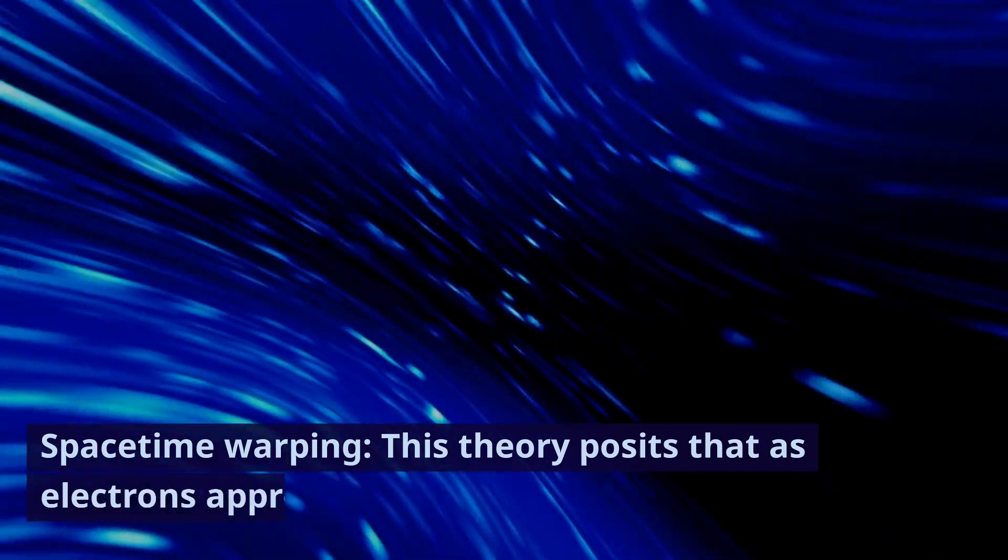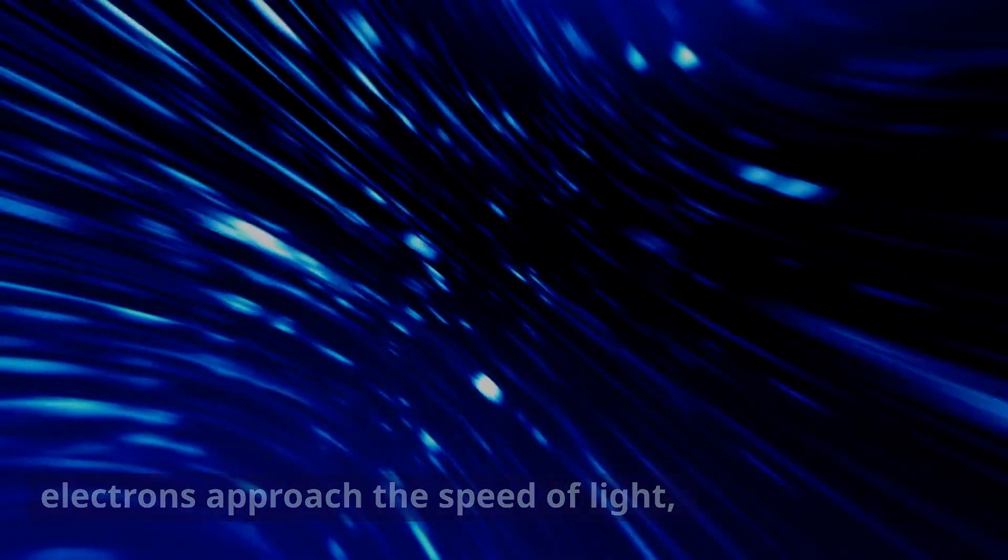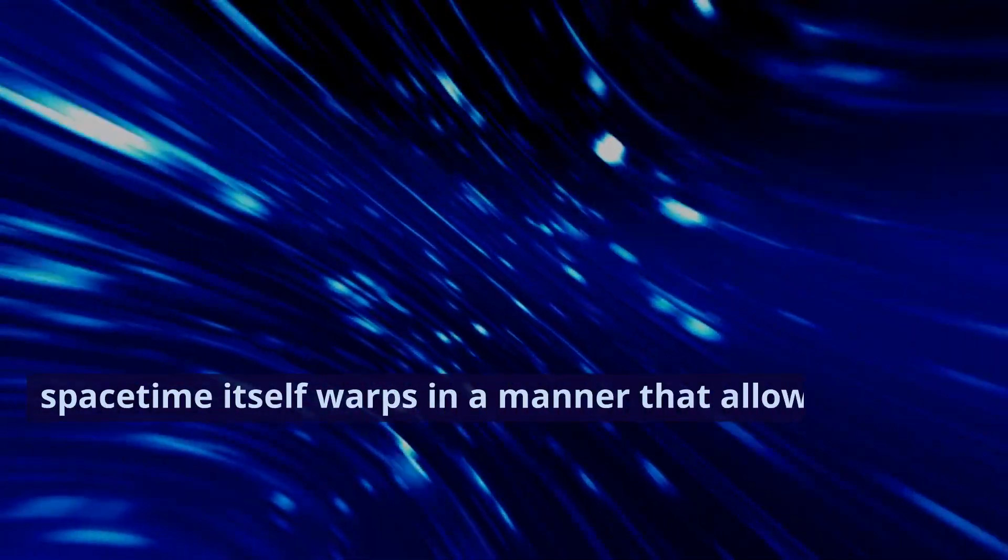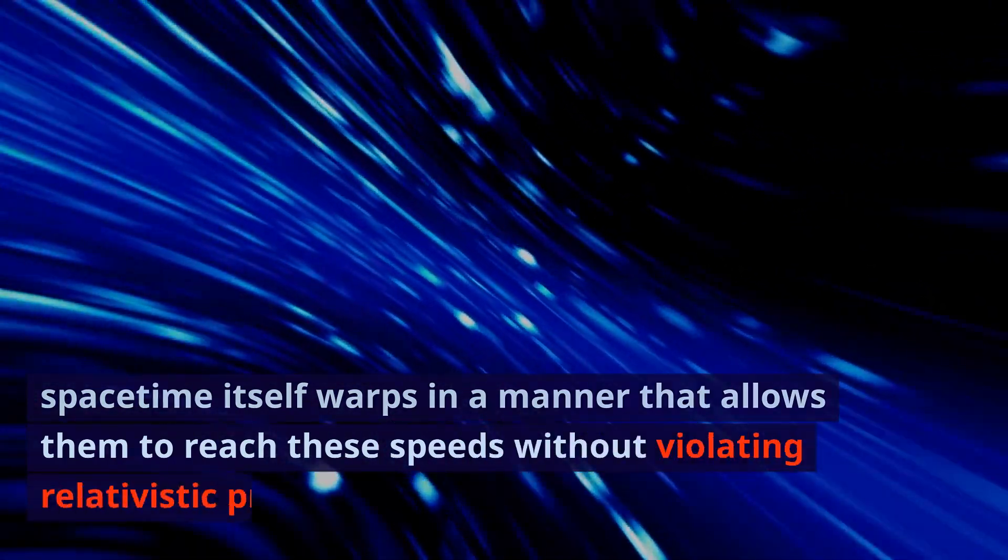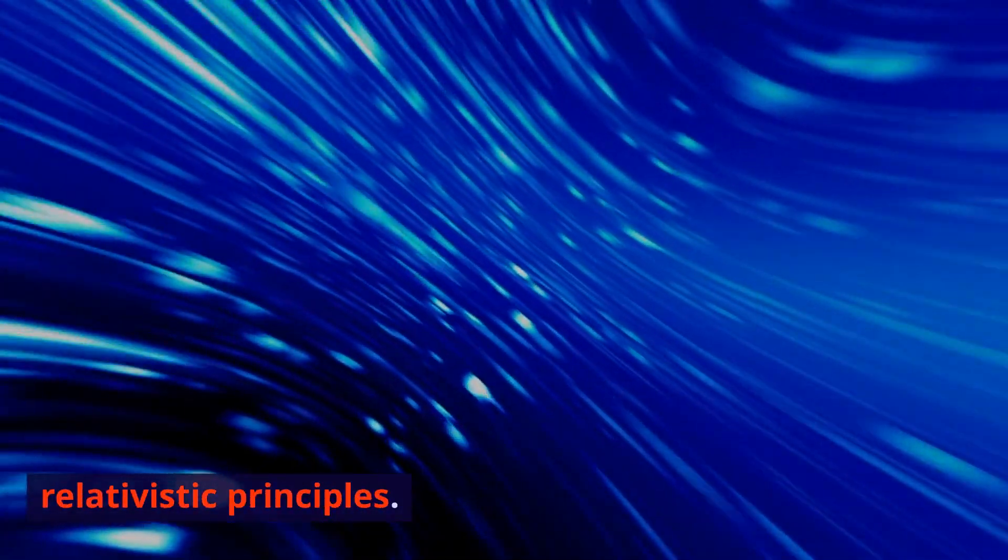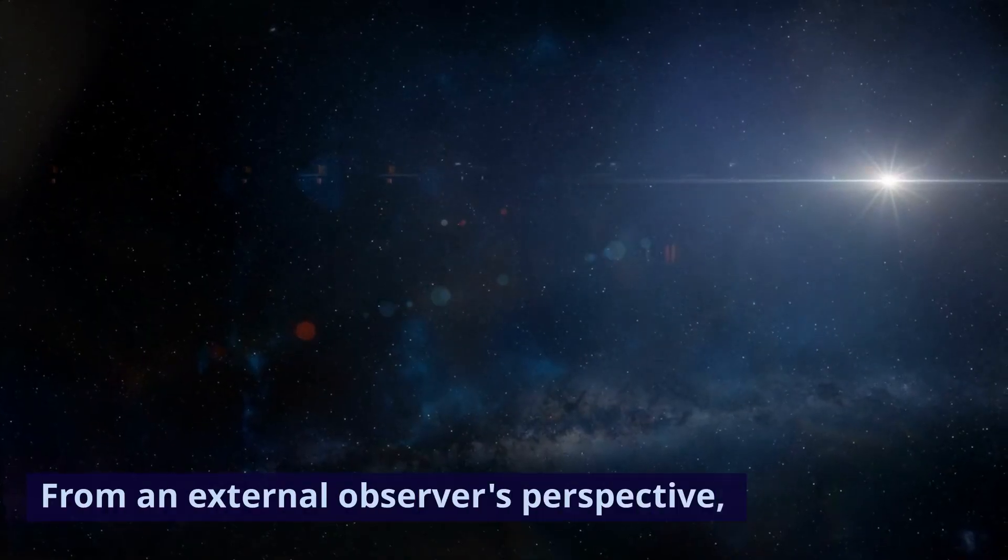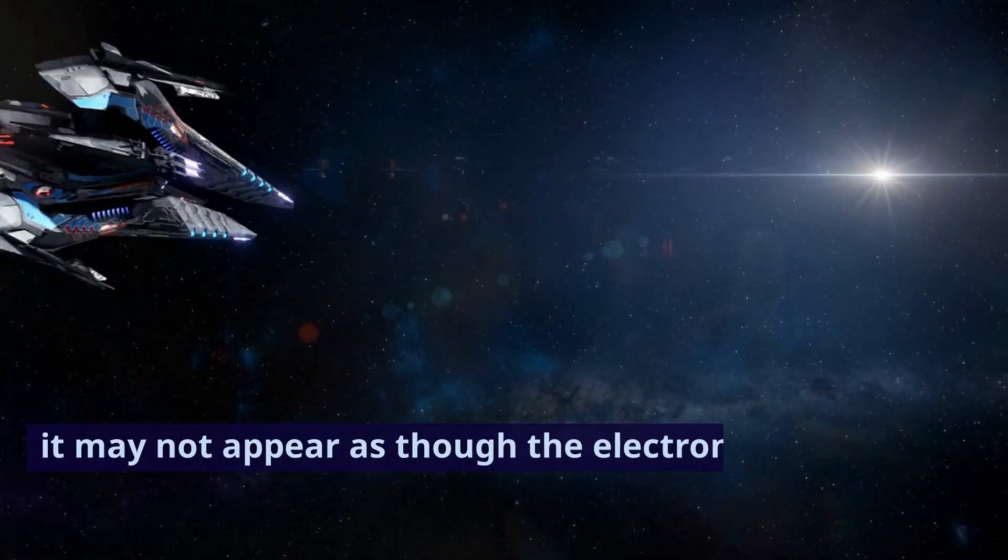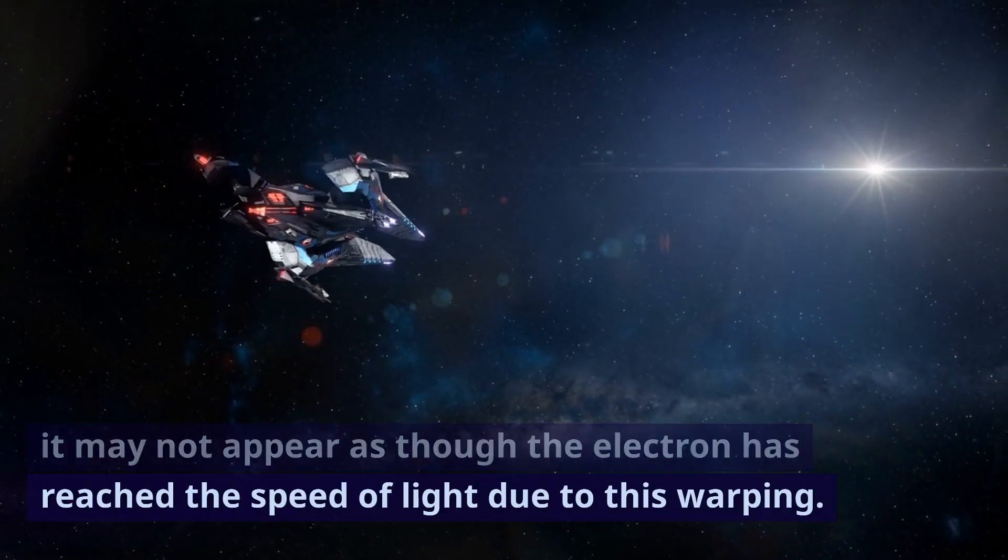Spacetime warping. This theory posits that as electrons approach the speed of light, spacetime itself warps in a manner that allows them to reach these speeds without violating relativistic principles. From an external observer's perspective, it may not appear as though the electron has reached the speed of light due to this warping.